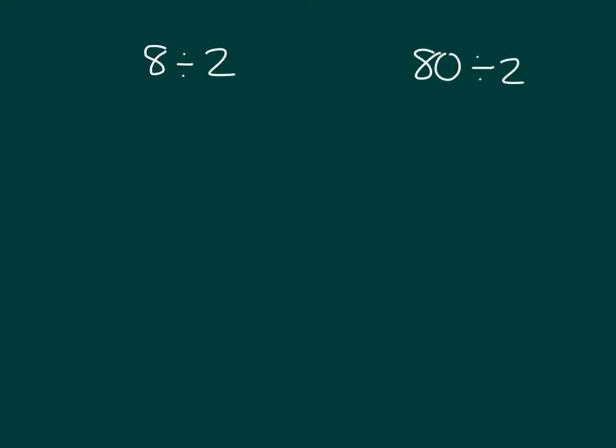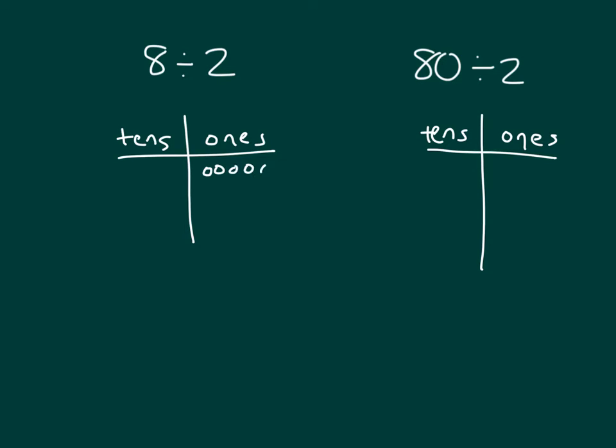Let's start by looking at these two expressions. We have 8 divided by 2, and we also have 80 divided by 2. Let's first look at these two expressions using number disks. I've made some place value charts to model 8 divided by 2. That's 8 in 8 ones, and if we're dividing by 2, then we would be dividing it into 2 groups.